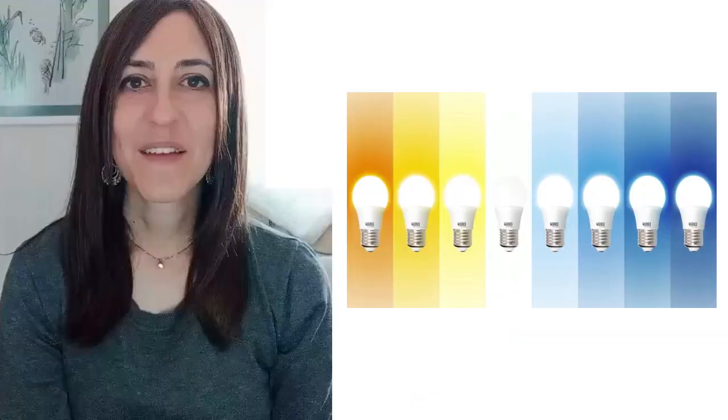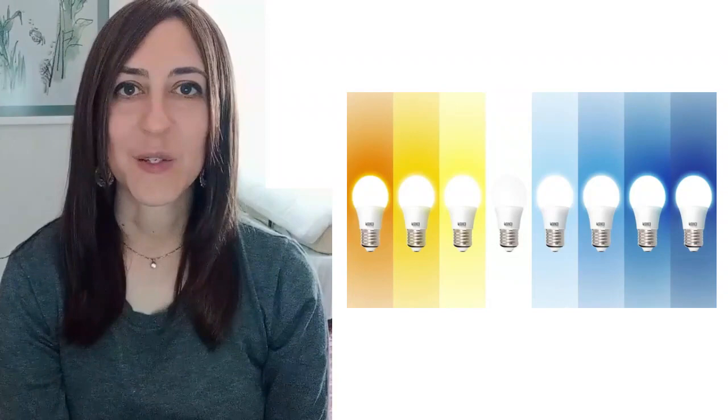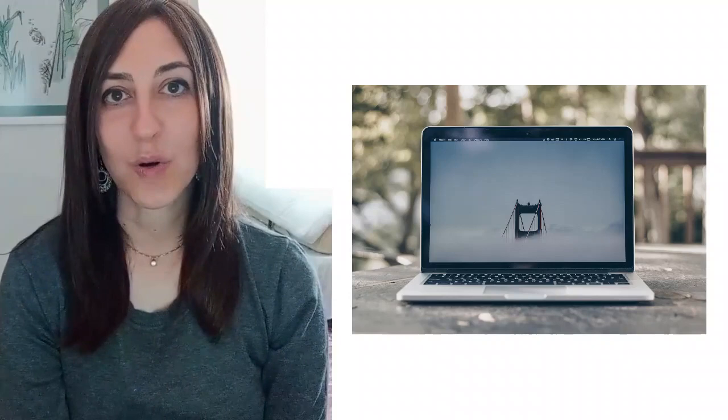If you've ever gone shopping for light bulbs, you know that light can be different colors or temperatures. Yellow or blue, warm or cool. The same is true of other light sources. The sun casts a warm yellow light and your computer screen emits a cool blue light. Fluorescent lights can cast all sorts of different colors. Here, for example, is a picture of our egg in a warm light. And here's our egg in a cool light.